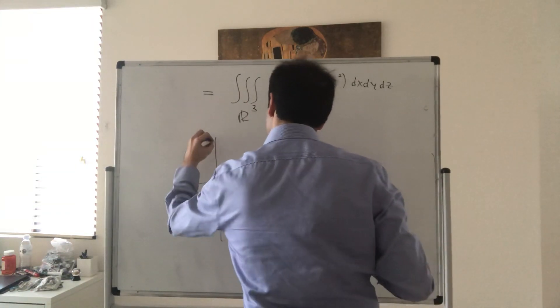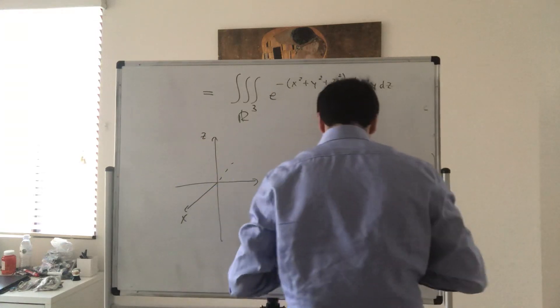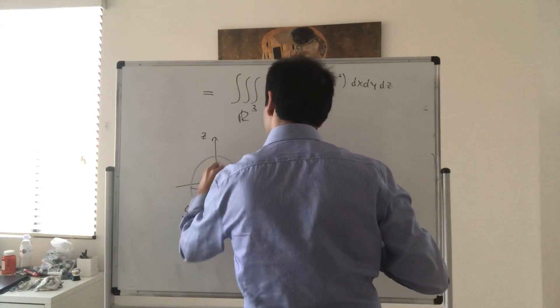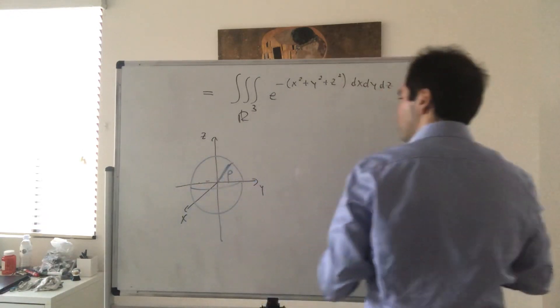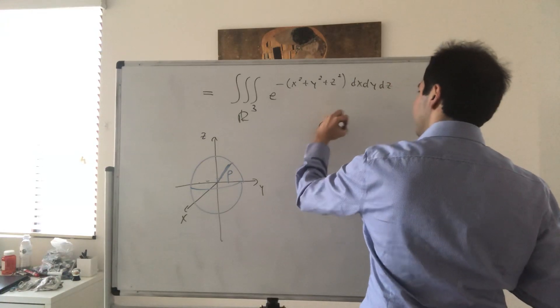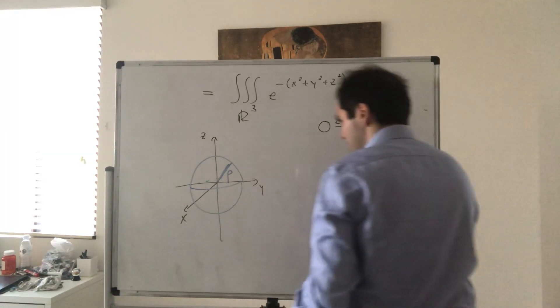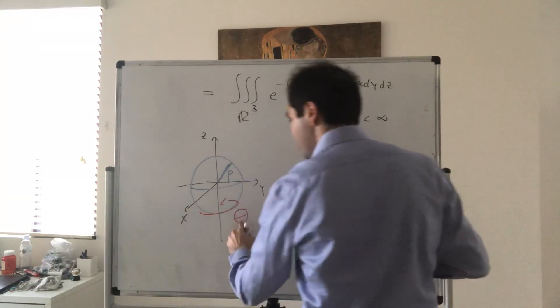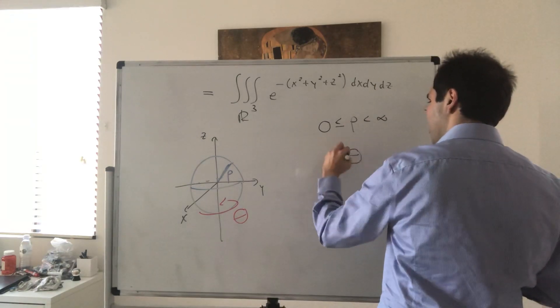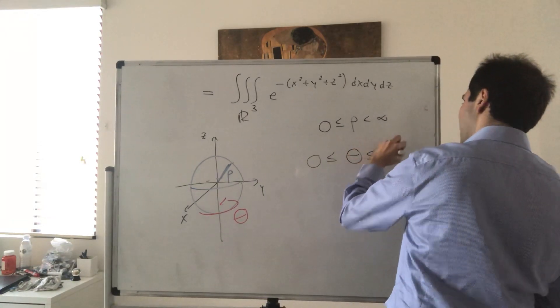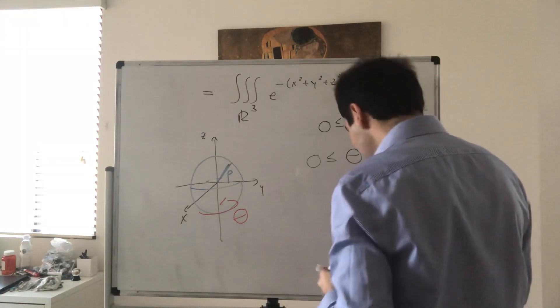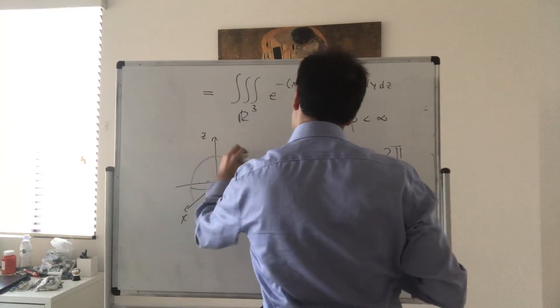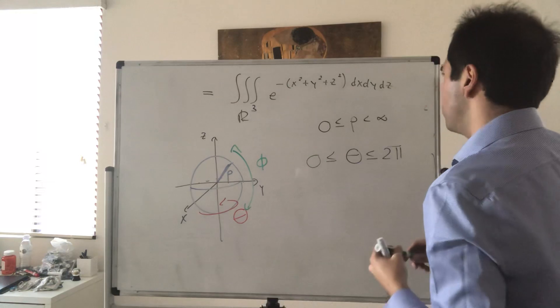So x, y, z. Again remember there's a radius, or the radius rho, that goes from 0 to, in this case, infinity. Then there's a horizontal angle theta—notice horizontal bar—so horizontal, it goes from 0 to 2 pi. And last but not least, there's a vertical angle phi that goes from 0 to pi.